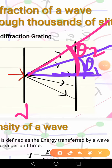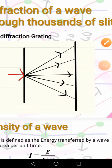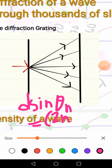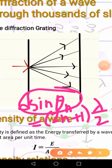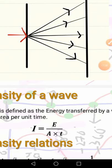The formula for the diffraction grating is: d sin(theta n) equals n lambda, for bright points. For dark points, the formula is d sin(theta n) equals (2n+1) lambda over 2. Here, d sin(theta n) is the path difference.